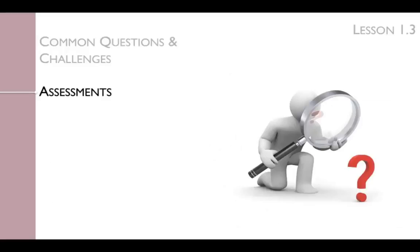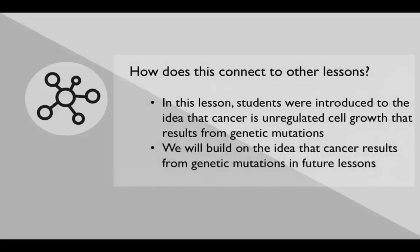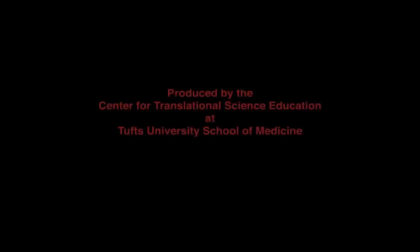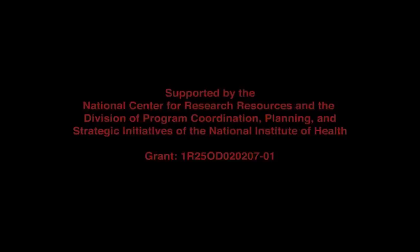At the end of the lesson, collect student worksheets to assess students' explanations of the properties of carcinogens and limitations of the Ames test. In this lesson, students were introduced to the idea that cancer is unregulated cell growth that results from genetic mutations. We will build on the idea that cancer results from genetic mutations in future lessons. If you have any questions, concerns, or feedback, you can contact any of the CTSC team members and we'll be happy to help you. Thank you.